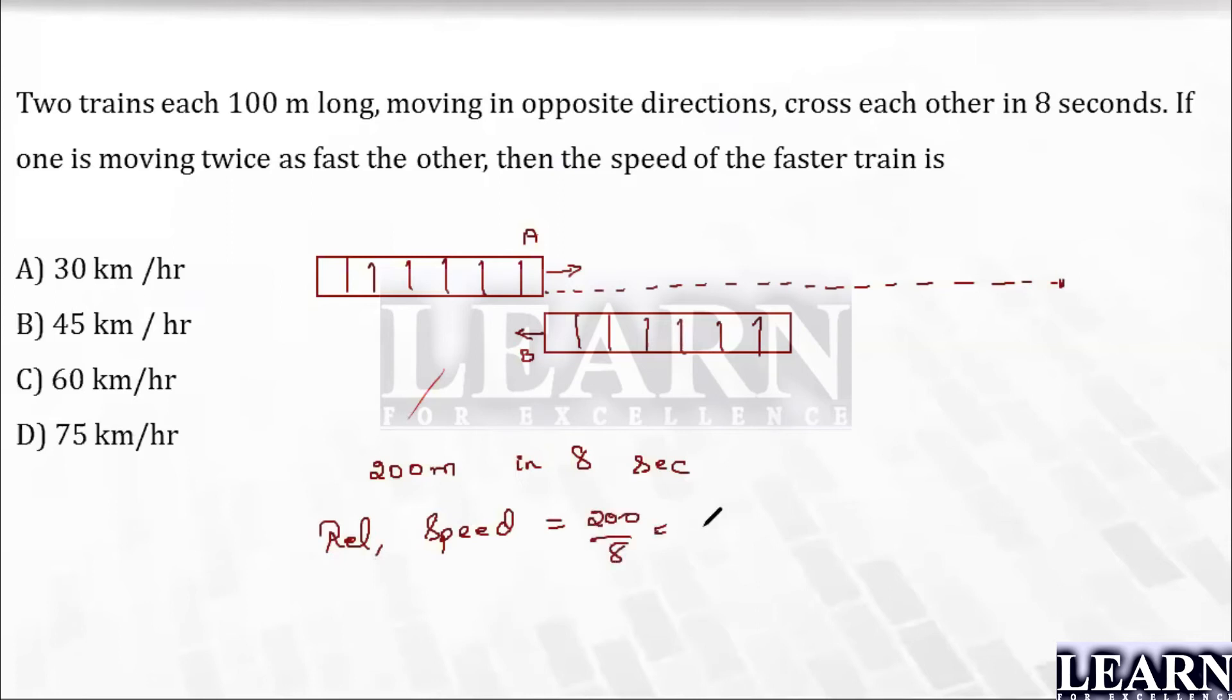Now if I'm going to look into this, the answer options are given in kilometers per hour. I can convert this meters per second into kilometers per hour by multiplying with 18 by 5. 18 by 5... I can see the combined speed is 90 kilometers per hour.